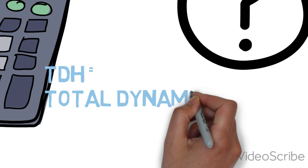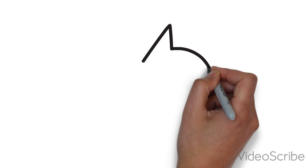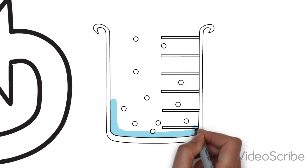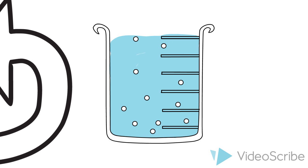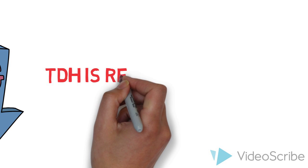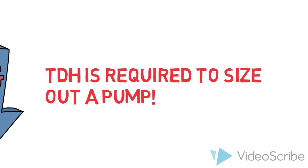TDH stands for Total Dynamic Head, which is the total amount of system pressure measured in feet where water is flowing through a system before gravity takes over. Put simply, you need the TDH in order to size out your pump.